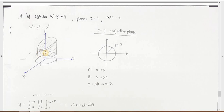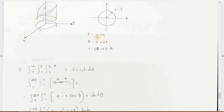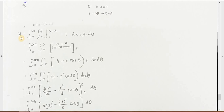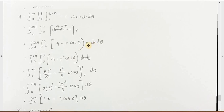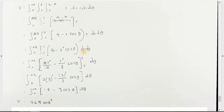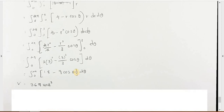Imagining yourself sitting inside the solid: looking down you see the plane z equals 1, so the lower z limit is 1. Looking up, you see the surface cut by x plus z equals 5, giving the upper z limit as 5 minus x. Put all intervals into the volume equation. Transform x to r cosθ, move r inside the bracket, integrate with respect to r, then with respect to theta. The volume equals 36π cubic units.